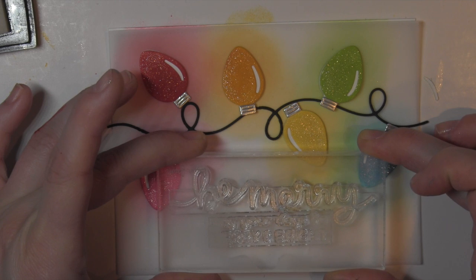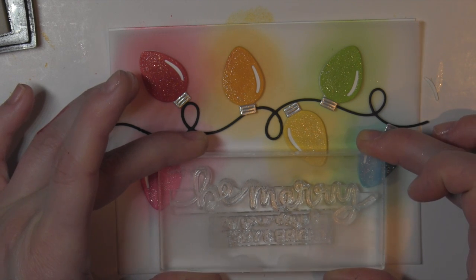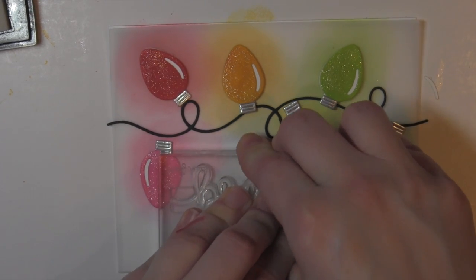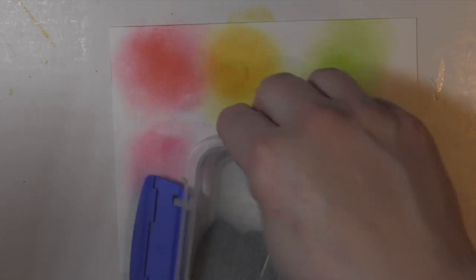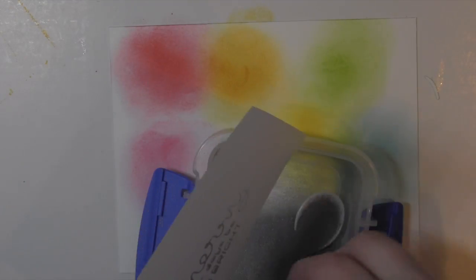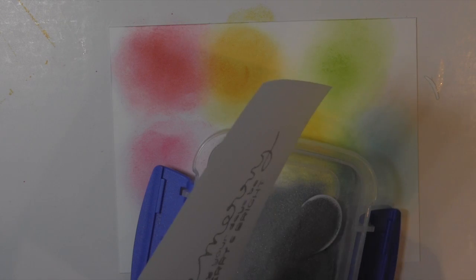And then I am using a combination of greetings from the Winter Big Scripty Words and Merry Messages and stamping those right there on my background. And I'm going to sprinkle on some silver embossing powder from Simon Says Stamp. I'll tap that off and then heat set that.